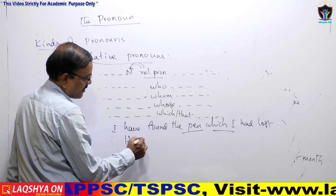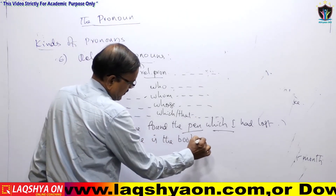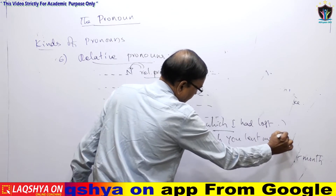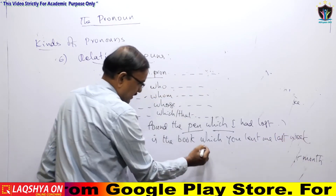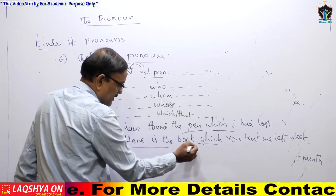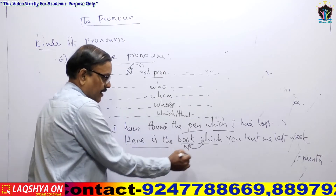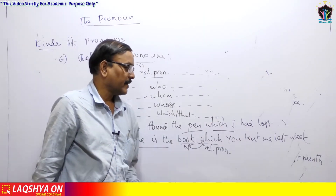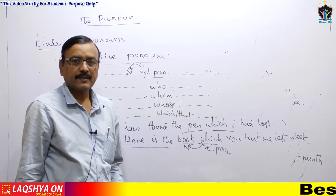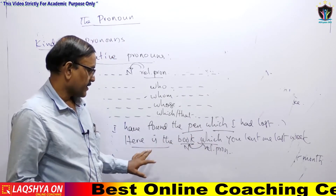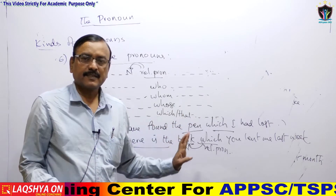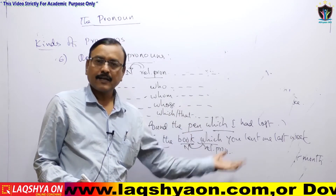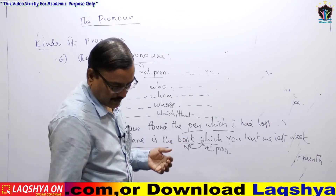Another example: 'Here is the book which you lent me last week.' Here 'which' relates to 'book' — this is the noun and 'which' is the relative pronoun. We can also say 'that' instead of 'which': 'Here is the book that you lent me last week.' Generally, 'which' and 'that' refer to things, though 'that' can also refer to persons in singular or plural.